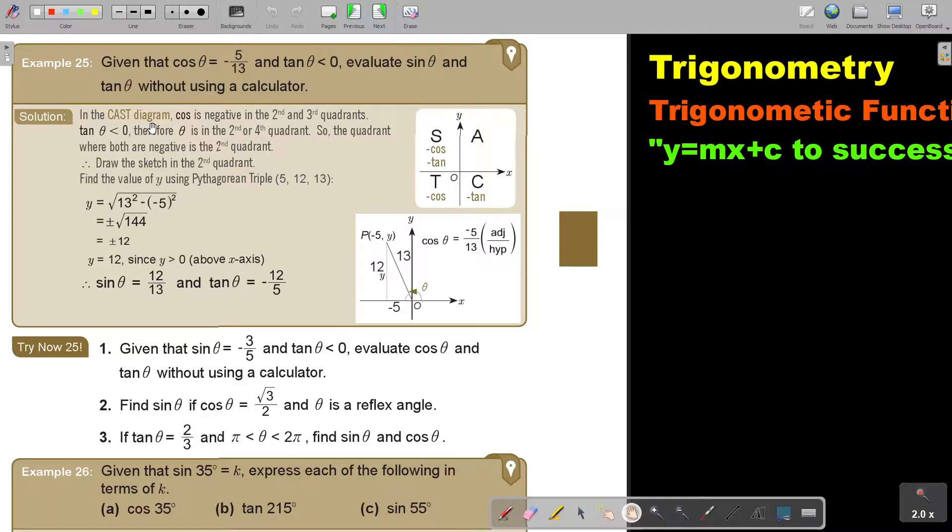So in the CAST diagram, cos is negative in the second and the third quadrants. And then where is tan negative? Tan is negative in the second and the fourth. So the quadrant where both are negative is the second. So I fill it in, in this quadrant above, because both conditions must be true.